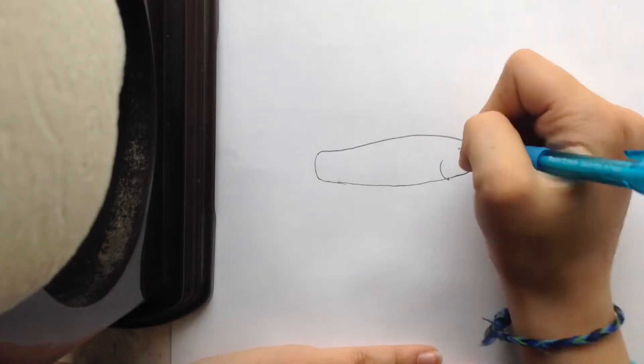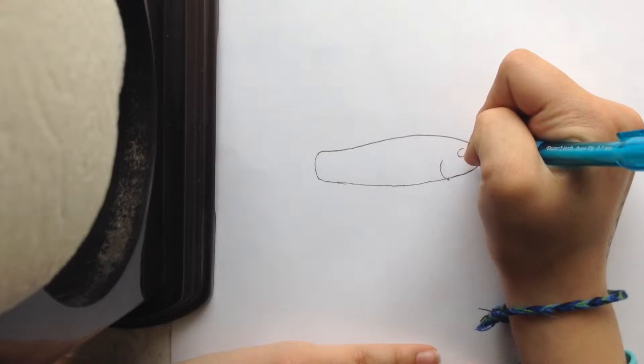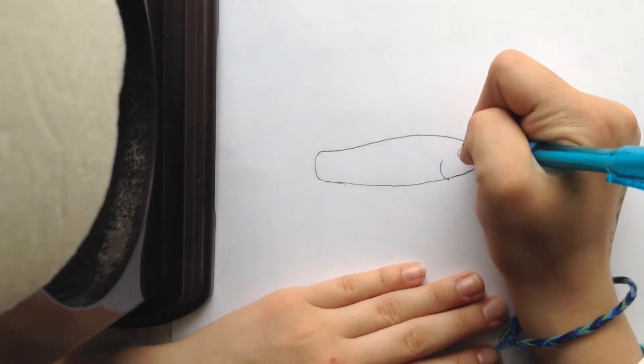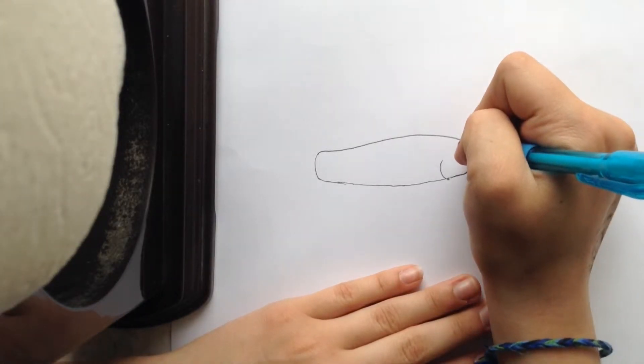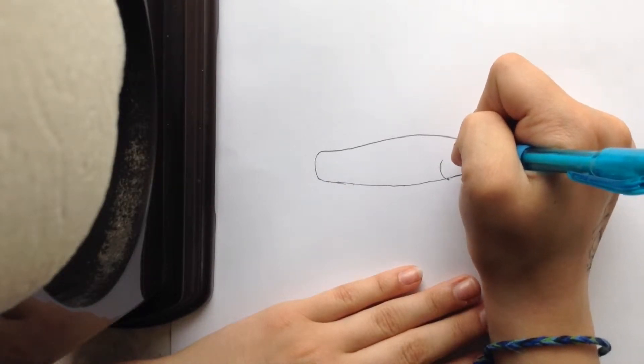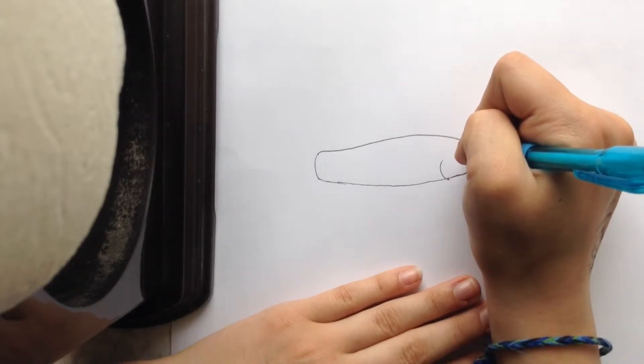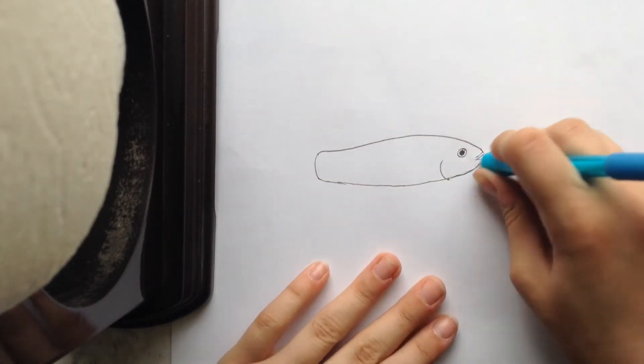Okay, so now you're going to draw the eye. You can draw a little white circle right there, and then make another bigger circle right here so it has more of a face.